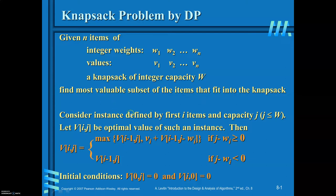In order to do that, first you are required to formulate the recurrence relation. For that, you are required to consider an instance defined by the first i items and capacity j, where j is less than or equal to w, because the maximum capacity of the sack is w. Let v[i][j] be the optimal value of such an instance.